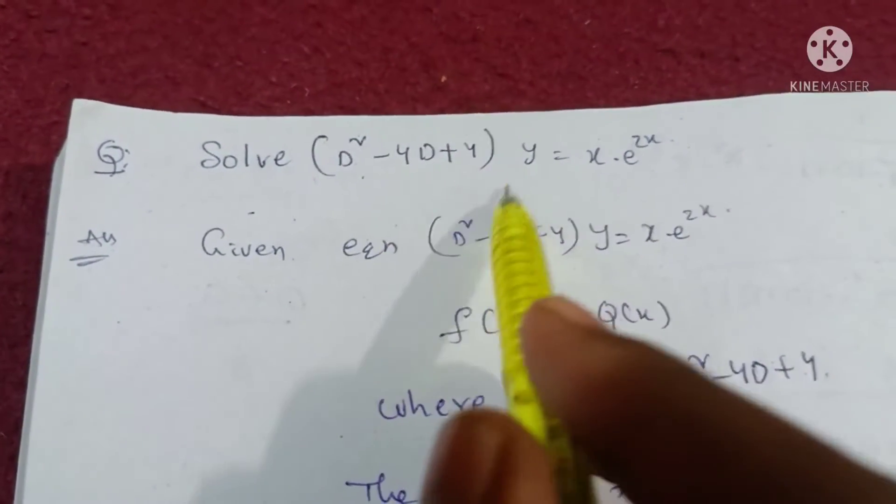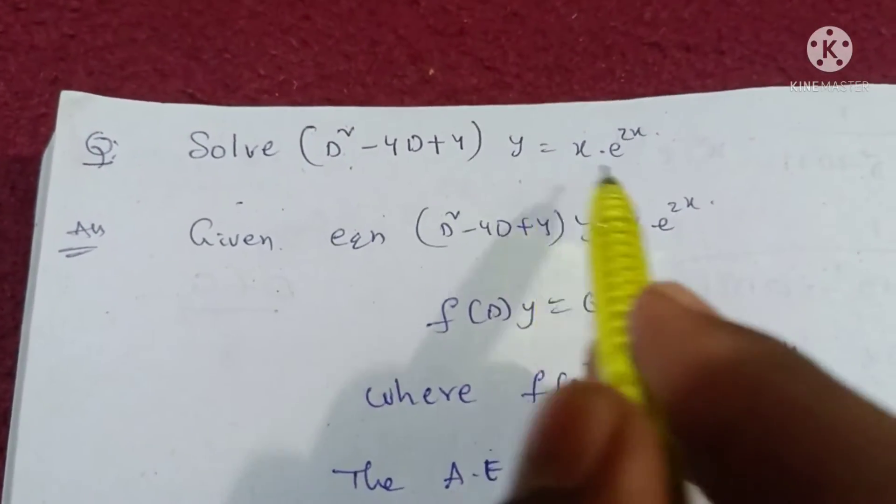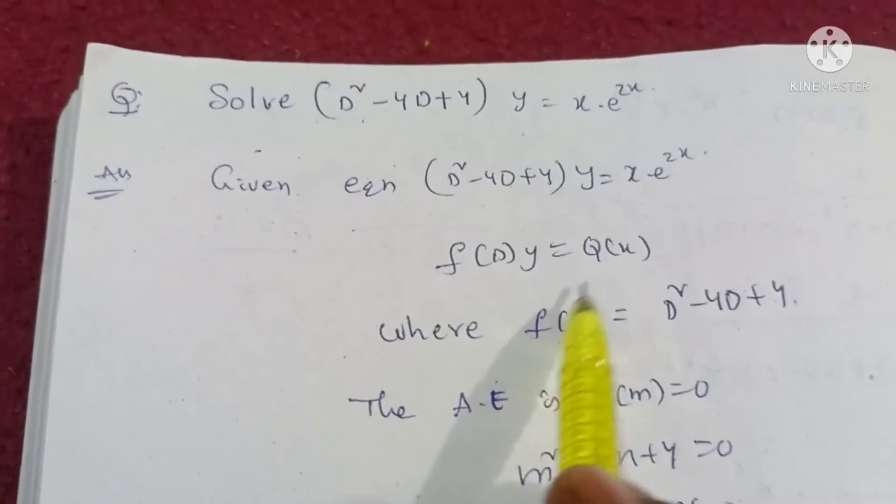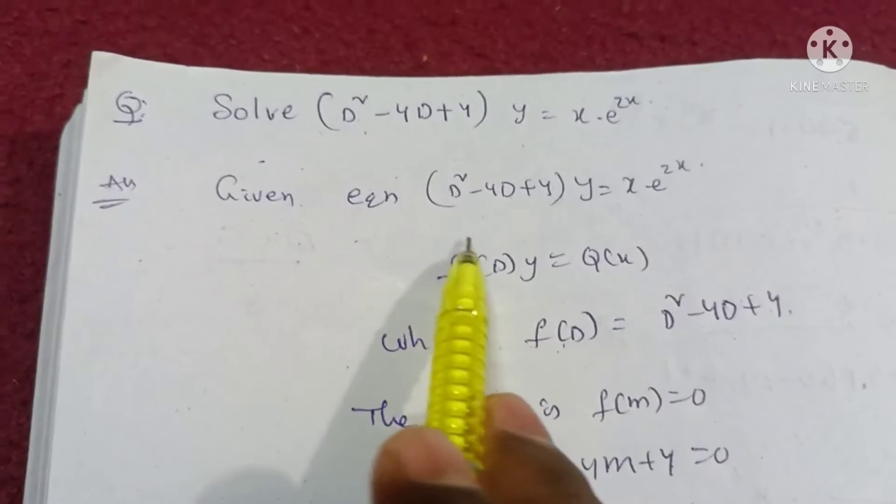Question: Solve d square minus 4d plus 4 into y is equal to x into e power 2x. Given equation, f of d of y is equal to q of x where f of d value are asked.